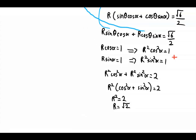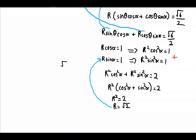But how do we find alpha? We plug r back in, and this gives us root 2 sine alpha equals 1, or sine alpha equals 1 over root 2, and therefore alpha is equal to pi by 4.